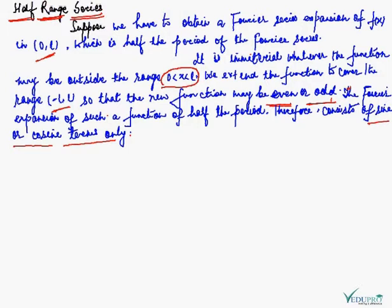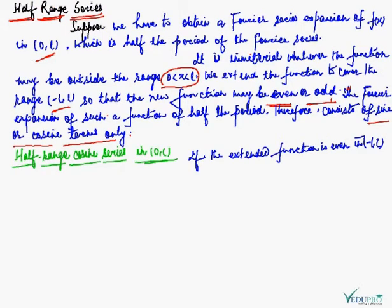What we saw is that if a function is even, then the Fourier series expansion will contain only cosine terms. And if the given function is odd in the interval minus l to l, its Fourier series expansion will contain only sine terms. That is, if the extended function is even in minus l to l, its Fourier series expansion will contain only cosine terms.